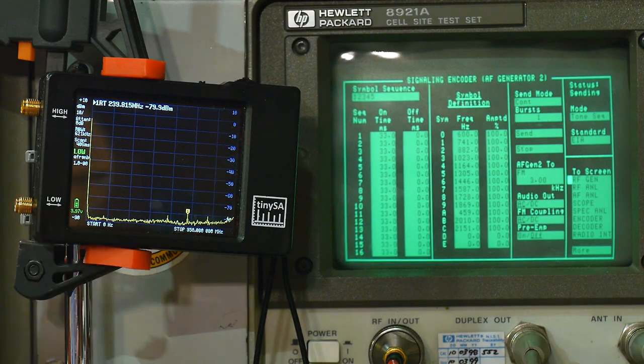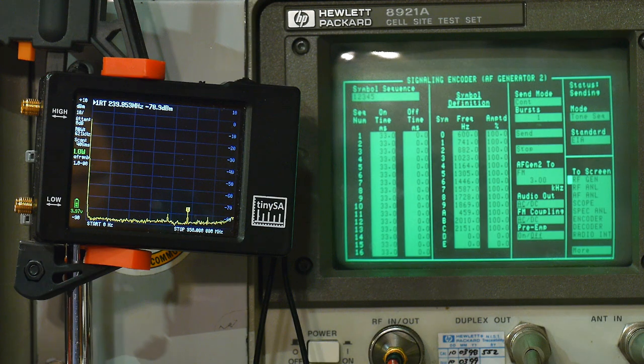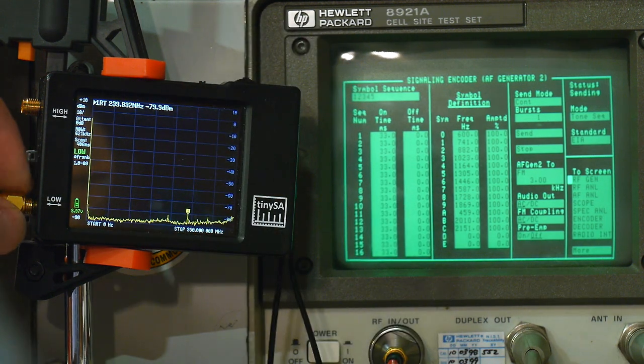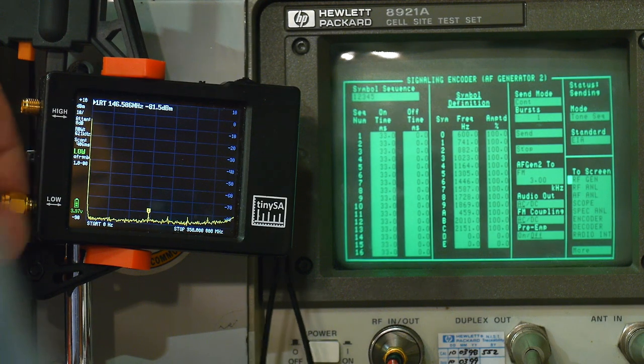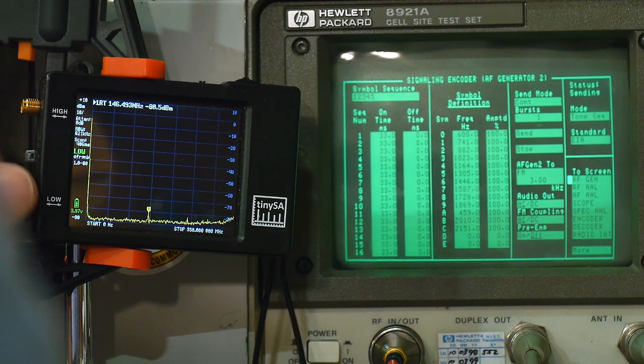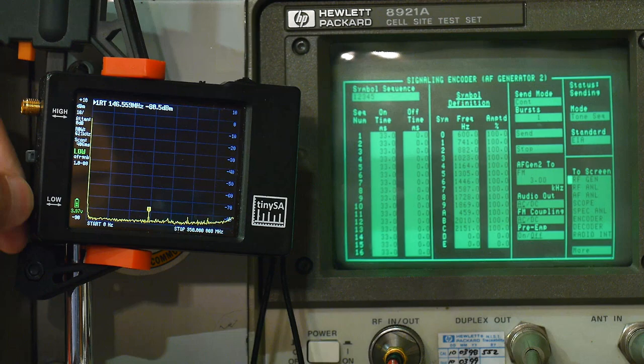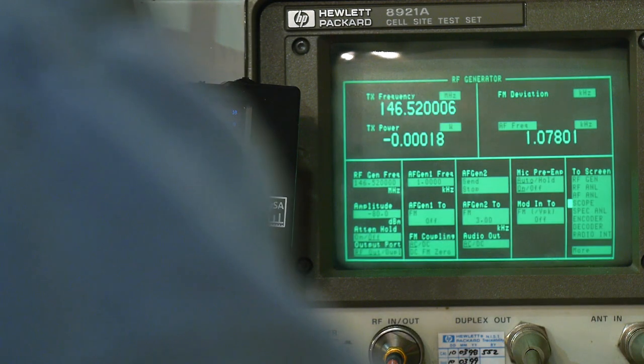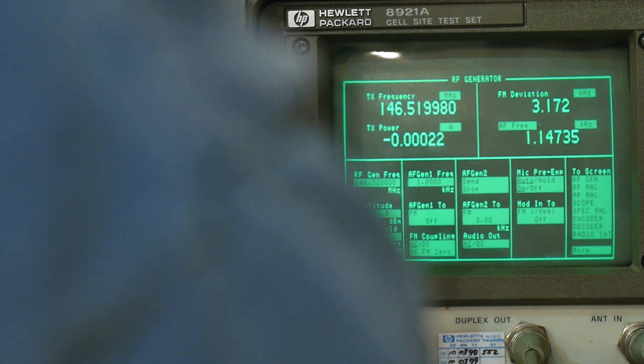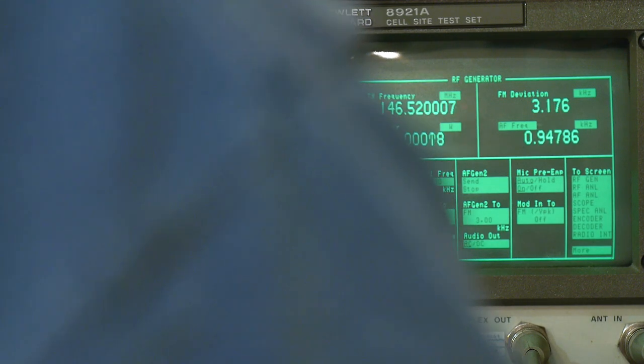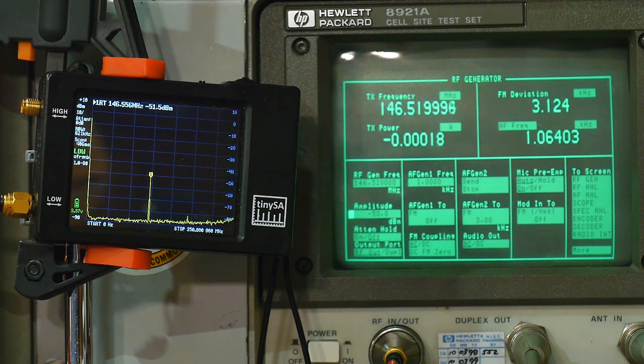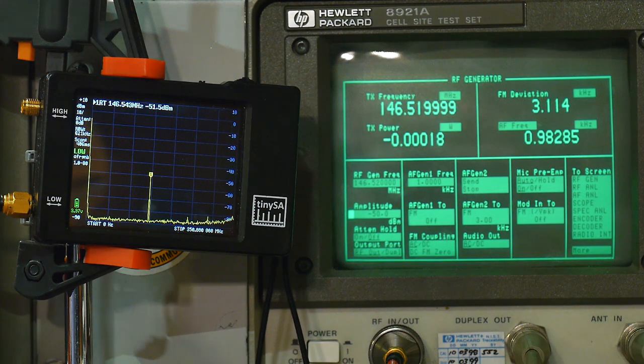Can the TinySA detect that? That's what our zero span would do. So let's put that signal into the low channel. It's minus 80 dBm right now, which is a little low for our spectrum analyzer. So let's change that to minus 50. And now we have a good signal on the spectrum analyzer.